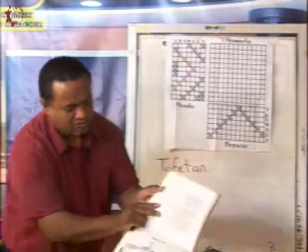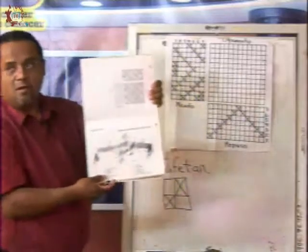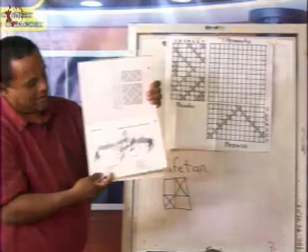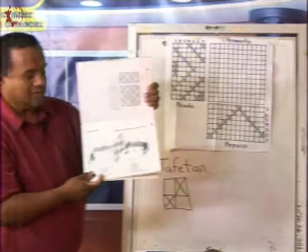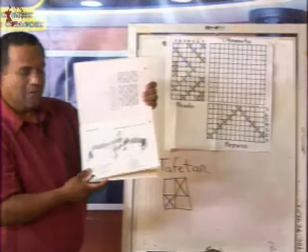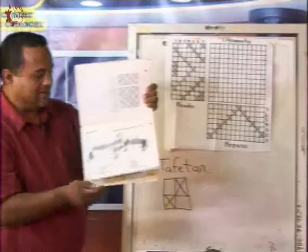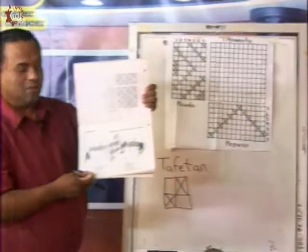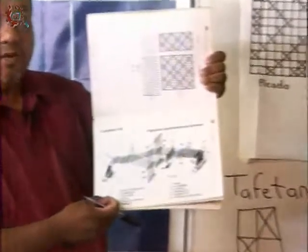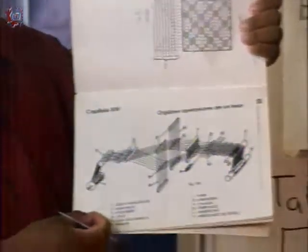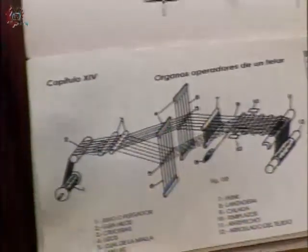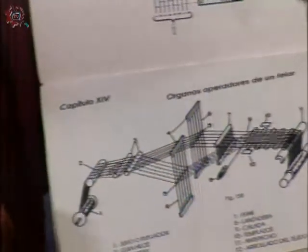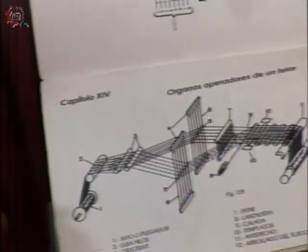¿Qué son todos estos conceptos? Tenemos aquí órganos operadores del telar. Este es un telar. Con tiempo, en el transcurso del año, vamos a hacer un telar casero en el cual vamos a desarrollar los propios tejidos. Pero antes de construir este telar casero y desarrollar nuestros tejidos ya en tela, primero debemos aprender a desarrollar los diseños en papel cuadriculado. El picado es cómo van a evolucionar los hilos para formar el tejido.